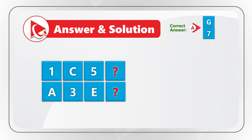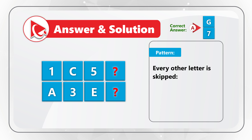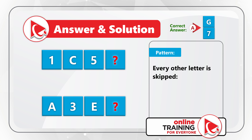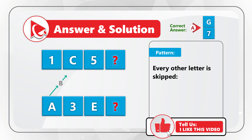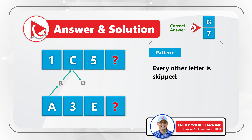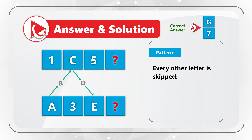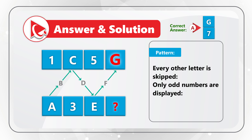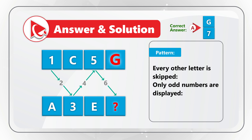I see the pattern that every letter here is skipped. If we start with the bottom letter A, then comes letter B, but then we see letter C in the second column. Then comes letter D, which is skipped, and then we see letter E, which means that letter F will be skipped and we will see letter G. Same is true for the numbers, because only odd numbers are displayed. We see numbers 1, 3, and 5. Numbers 2, 4, and 6 are skipped, which means the missing number is 7.